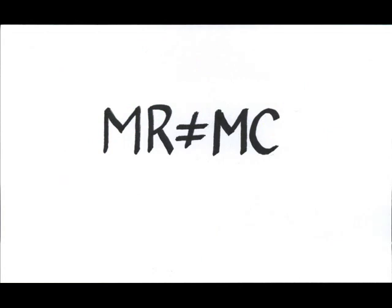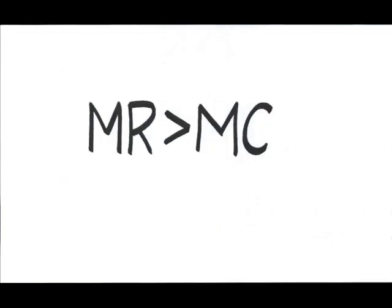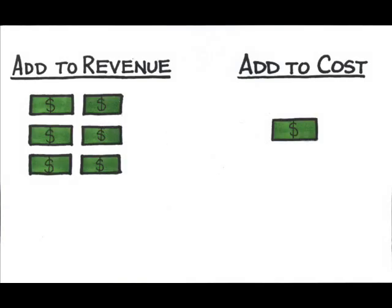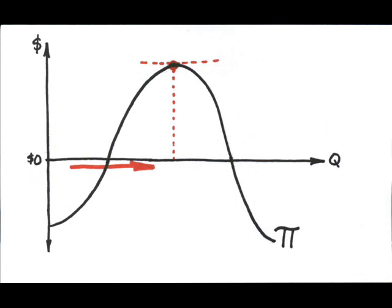For example, what if marginal revenue is greater than marginal cost? This means that more is being added to revenue than to cost, so profits are still rising. You would want to increase your output until marginal revenue equals marginal cost.